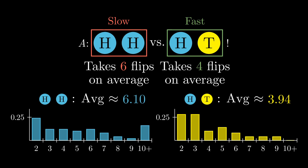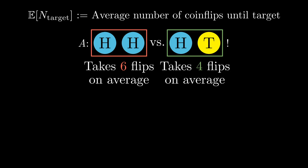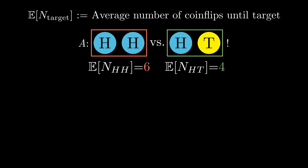It is not easy at first to see where these numbers come from. In the rest of the video I'll present a beautiful theorem called the abracadabra theorem that lets you easily calculate these values of six and four. Using the notation bold E for expected value and N subscript some target sequence to denote the number of flips needed, we can write: E(N_HH) = 6, and similarly E(N_HT) = 4.